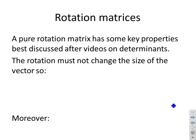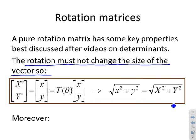Rotation matrices have some key properties best discussed after videos on determinants. The key thing is that a pure rotation must not change the size of the vector. Therefore, in the original and new frame of reference the radius of the point must be the same. The square root of x squared plus y squared must be the same as x prime squared plus y prime squared.